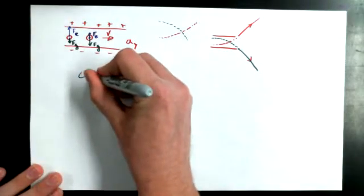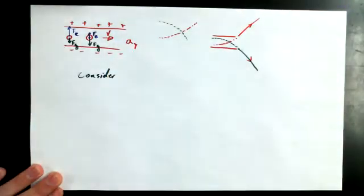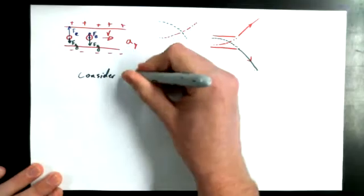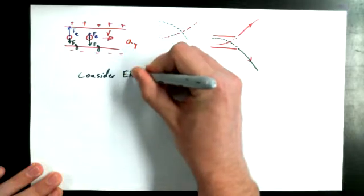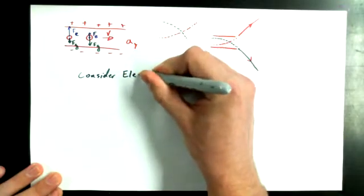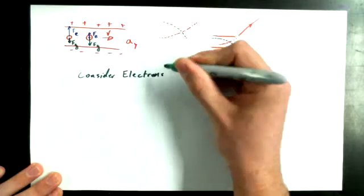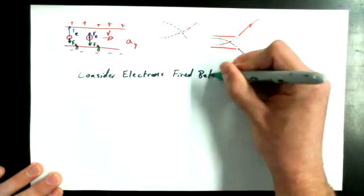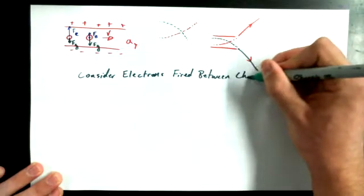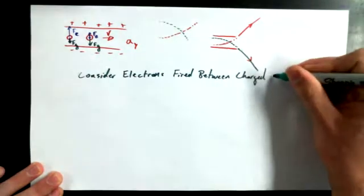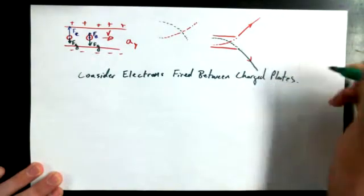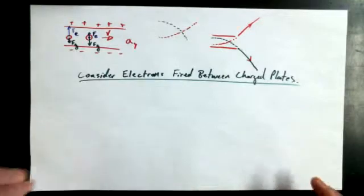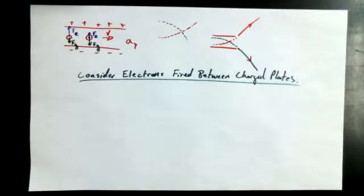And it's good for oil droplets, but let's consider something a little bit more microscopic, something subatomic. Consider just electrons. Individual electrons fired between charged plates. Now, electron is so small, and we talked about the relative strength of gravitational force versus electrostatic force at some previous point in the course.